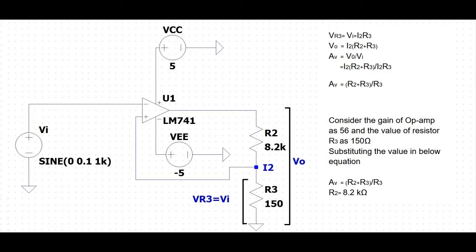Let us consider the gain of the op-amp as 56 and the value of resistor R3 as 150 ohm. Based on the gain equation, we can calculate the value of R2, which would be around 8.2 kilo-ohm. Based on these values, let us design the circuit of the non-inverting amplifier in the KiCad simulation tool.